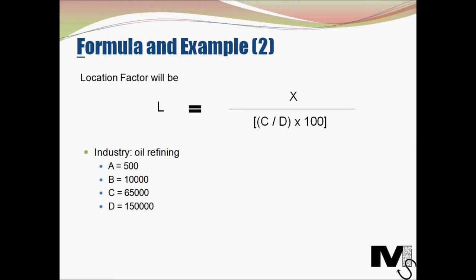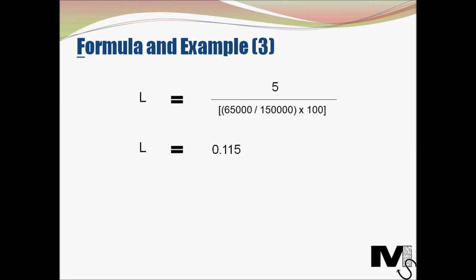Let's assume our industry to be oil refining. With A = 500, B = 10,000, C = 65,000, and D = 150,000, we get 5 divided by (65,000 divided by 150,000 times 100). The value comes out to be 0.115. This indicates that the industry in question is not centralized in the area we chose and does not have an above-average presence of workers or the workforce.